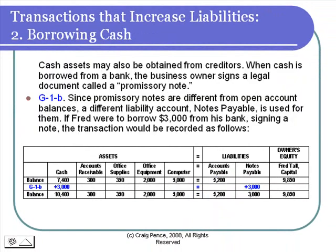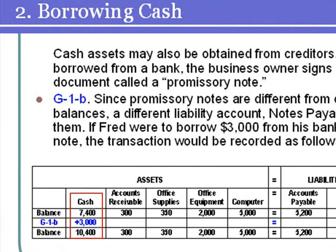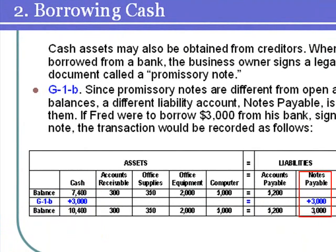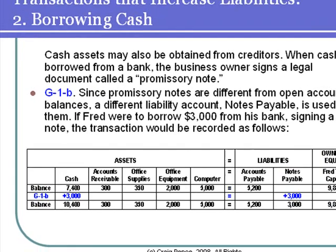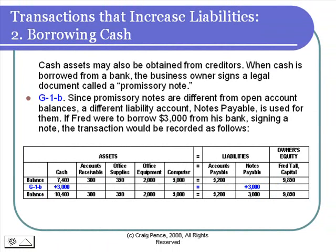In this transaction, cash is borrowed from the bank, and the bank had Fred Tall sign a promissory note. Interest will be charged on this loan while it's outstanding. We'll need to record an increase in the cash account, and then record an increase in the liability account notes payable. A promissory note is a long-term loan that carries an interest rate. It's different from an open account balance, which we refer to as an accounts payable. The reason for using two different liability accounts is so that we can report more detail about the business liabilities when it's finally time to do the statements at the end of the accounting period.